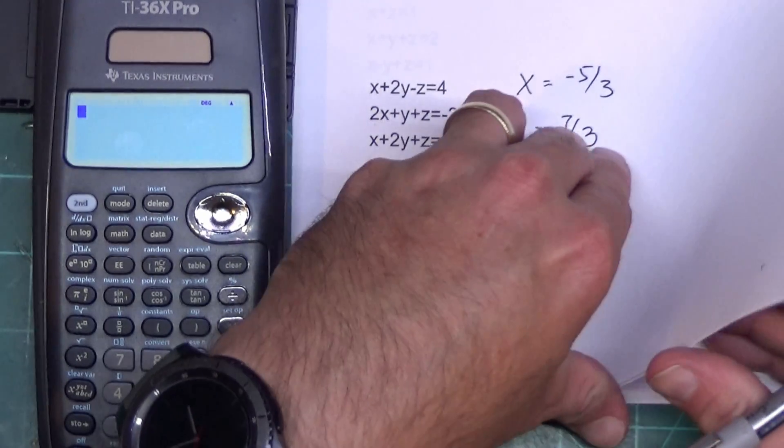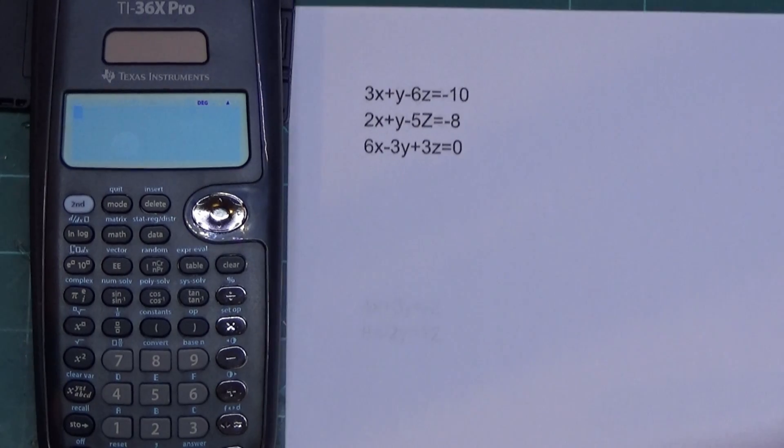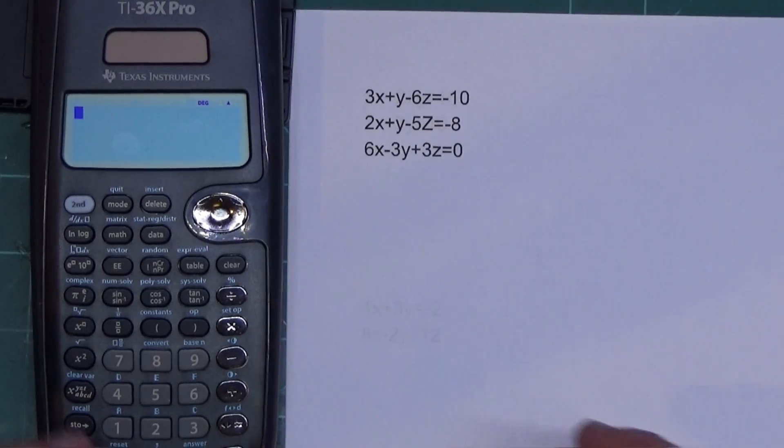Then it puts it on solve. So I hit solve. Takes it a little bit, but it tells me X is negative 5 thirds. I push the down button. Y is 7 thirds. Push the down button again. It tells me Z equals negative 1. Now if I hit solve again, it'll let me type in another one. I'm going to hit quit because I feel like it and it takes me to the home screen. So you can see the 2 by 2 and the 3 by 3 behave a little bit differently.